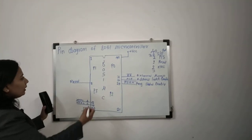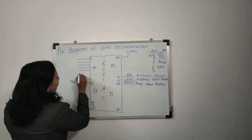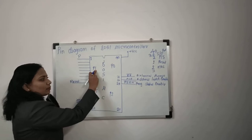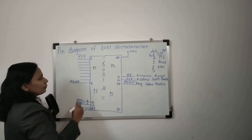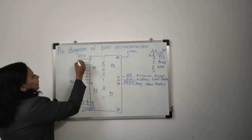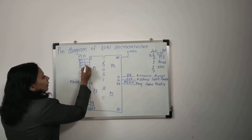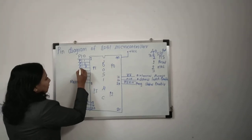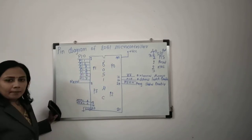Port 1 has 8 pins labeled P1.0 through P1.7. The first pin is P1.0, meaning port 1, pin number 0. Then we have P1.1, P1.2, P1.3, P1.4, P1.5, P1.6, and the last is P1.7.